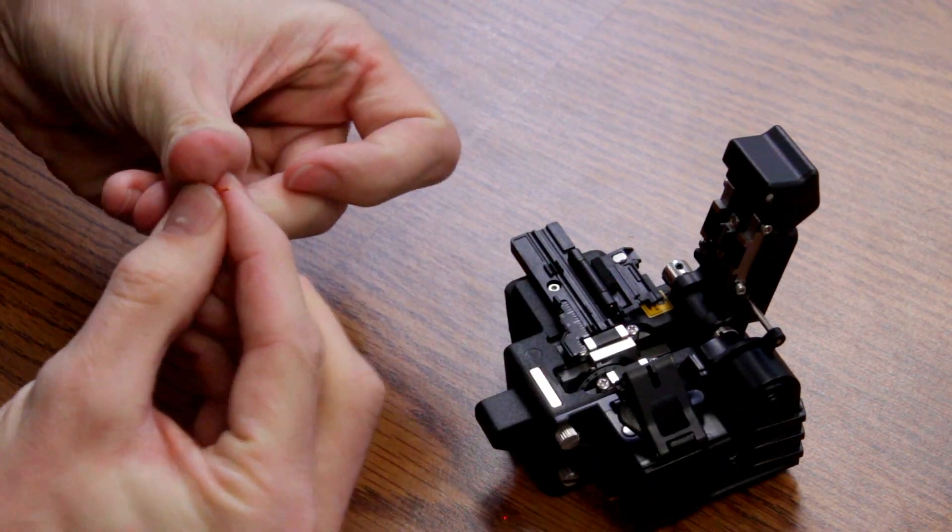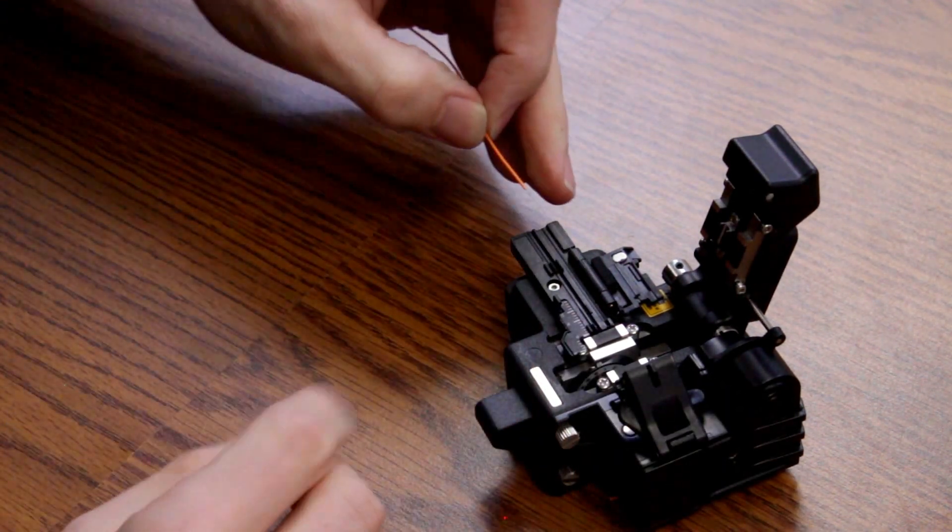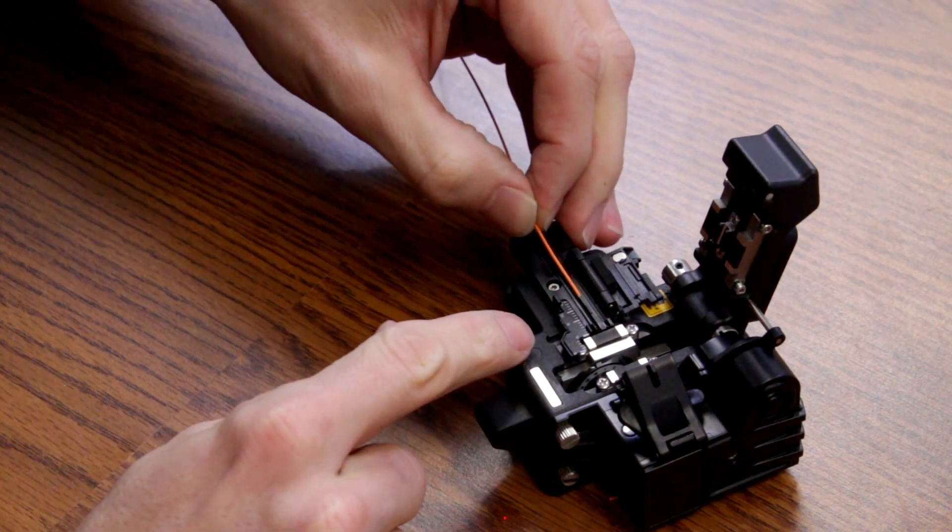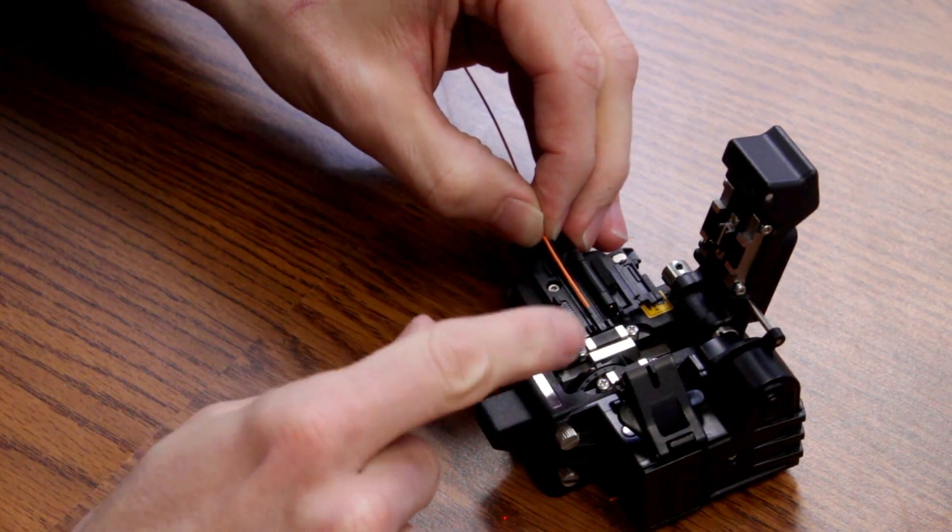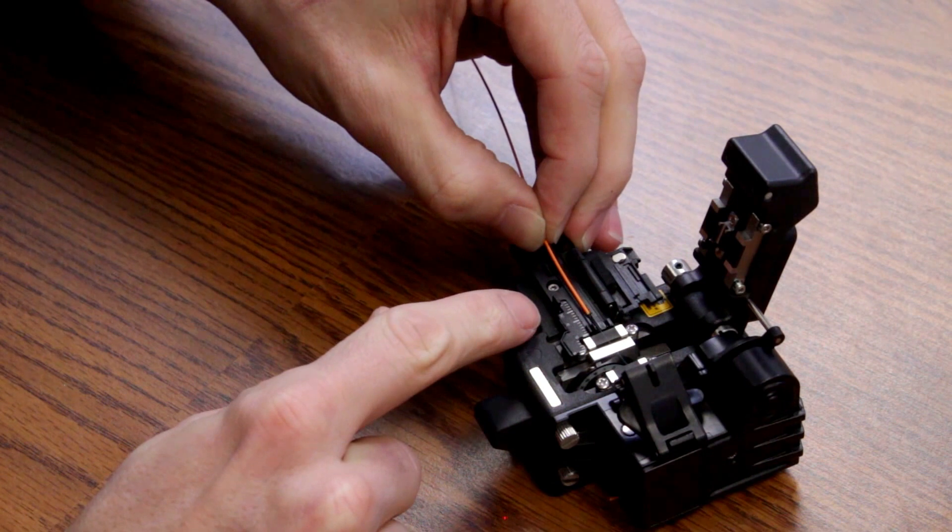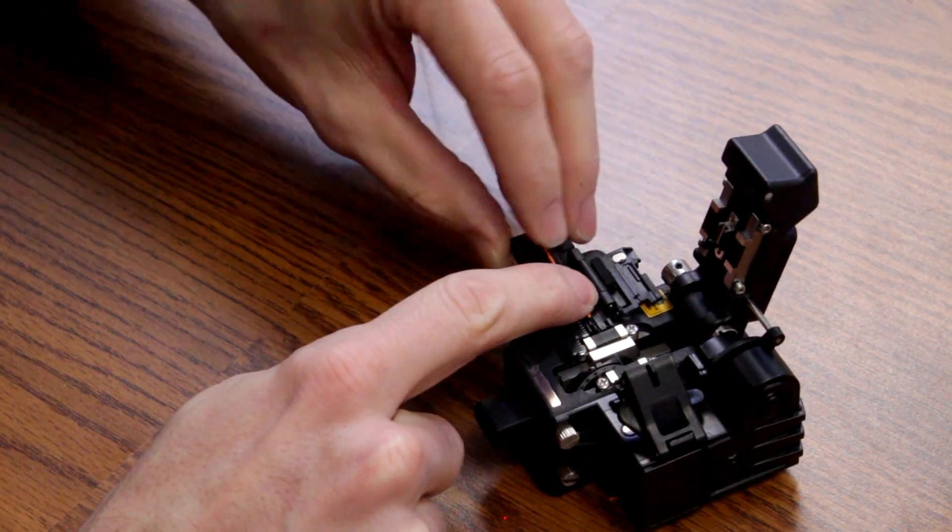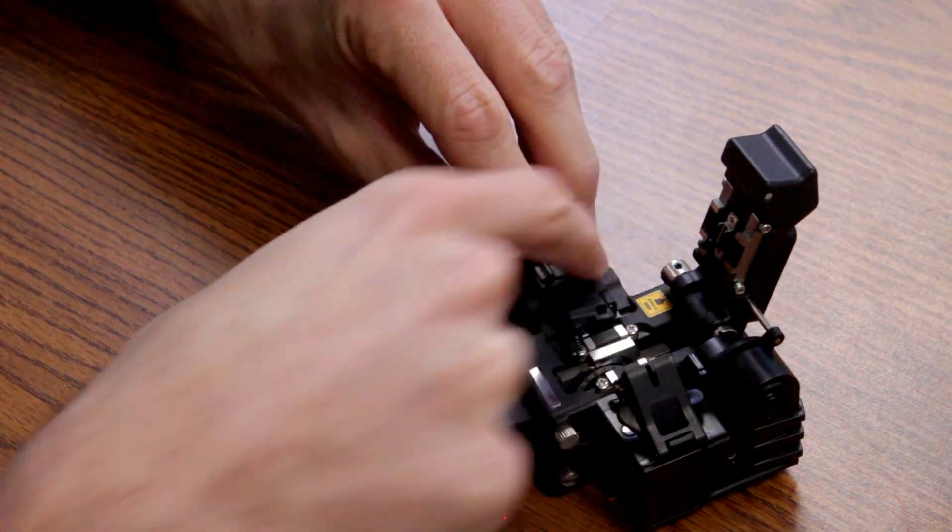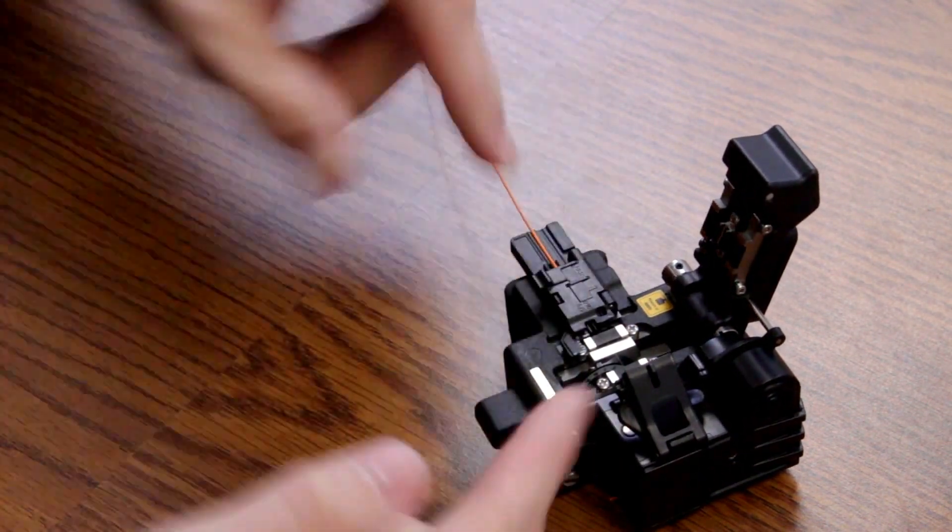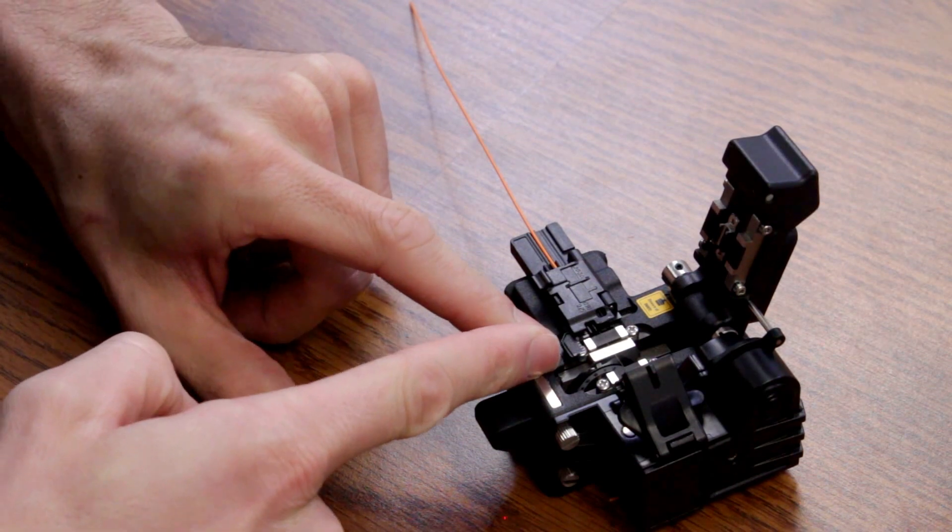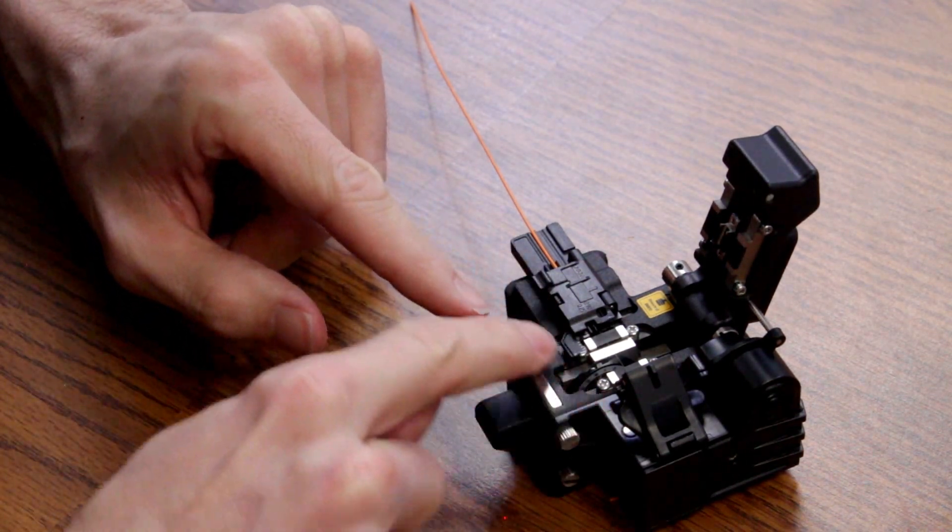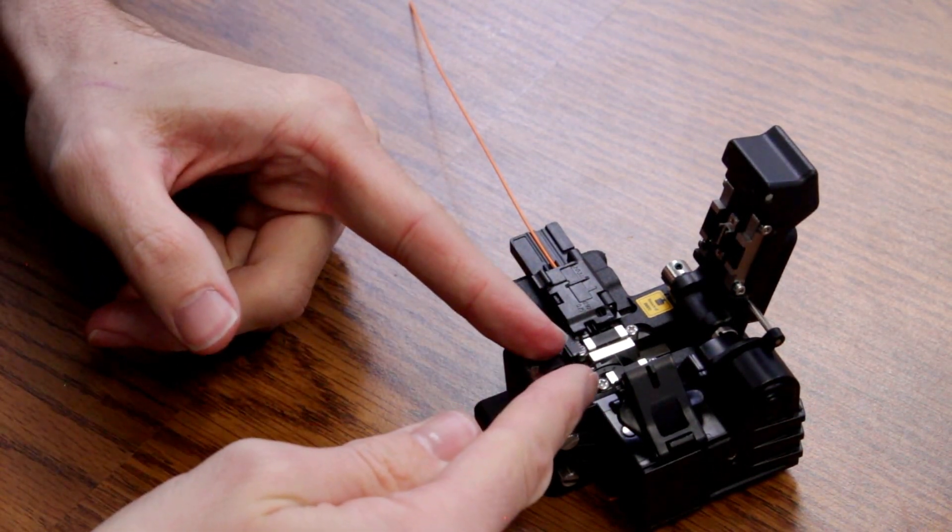Then I'm going to measure the fiber off into the measure here. Lay it across both sides. I'm going to cleave at 16 millimeters. I'm going to snap it in place. And I want to take careful attention to make sure it's evenly across the two fiber holders on the sides.